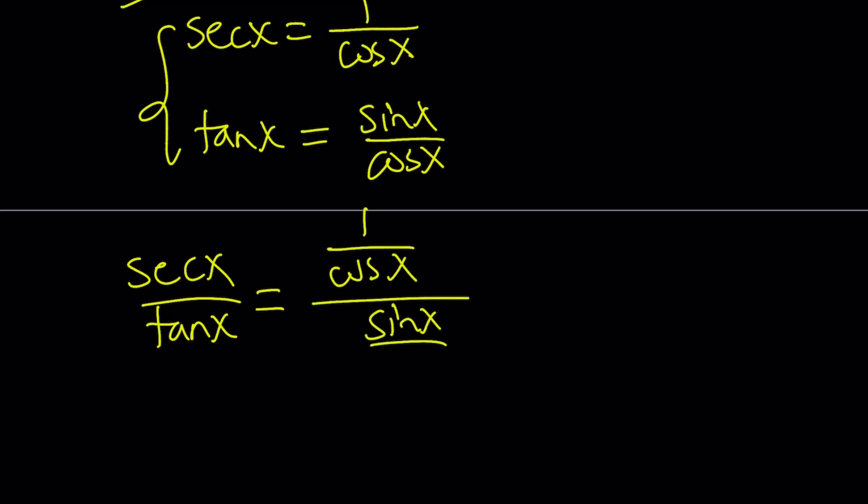If cosine does not equal 0, we already talked about it, then we can go ahead and cancel these out, and we get 1 over sine x from here, and that's equal to square root of 2.